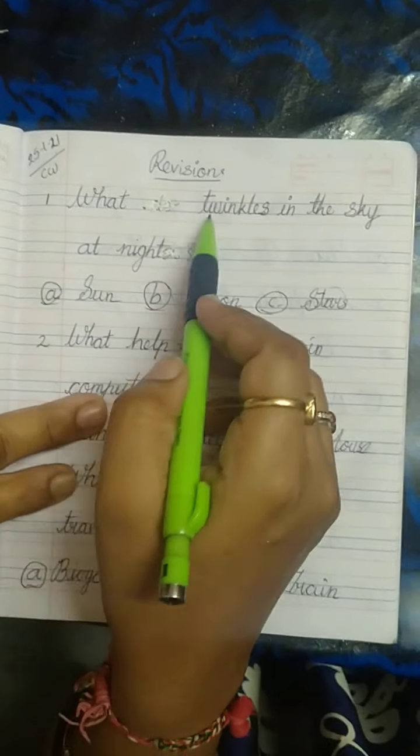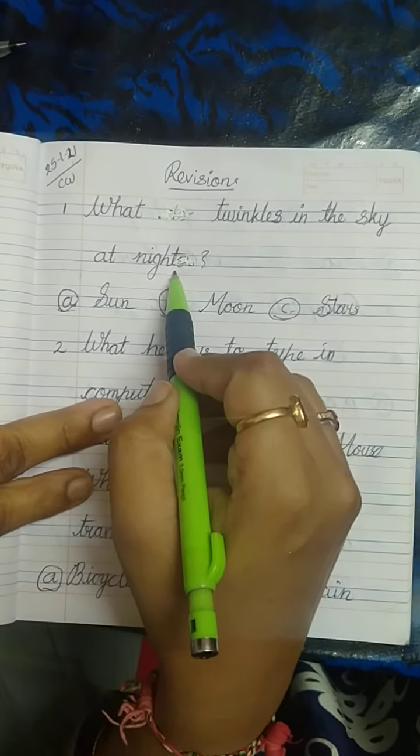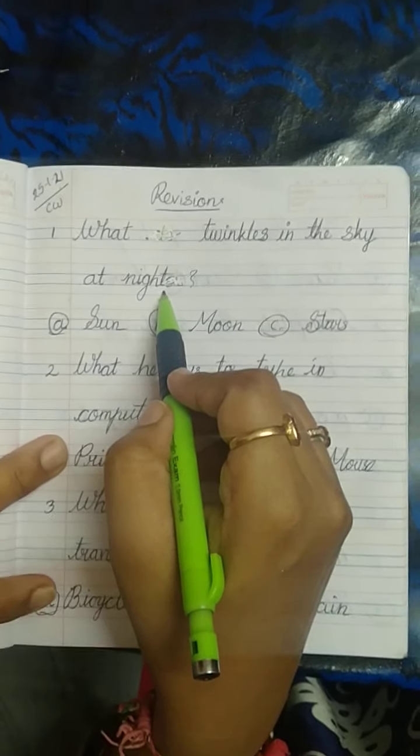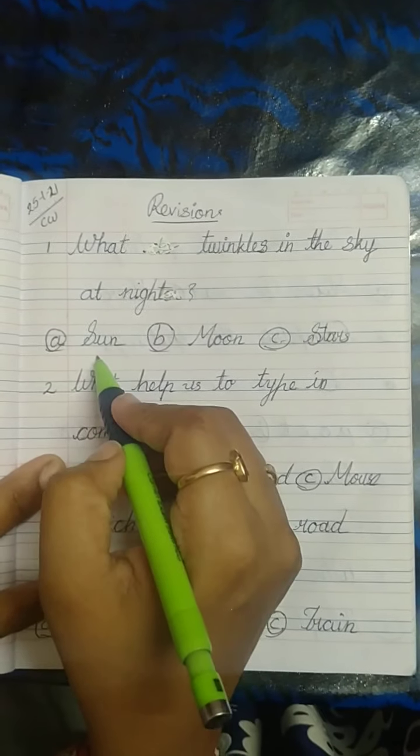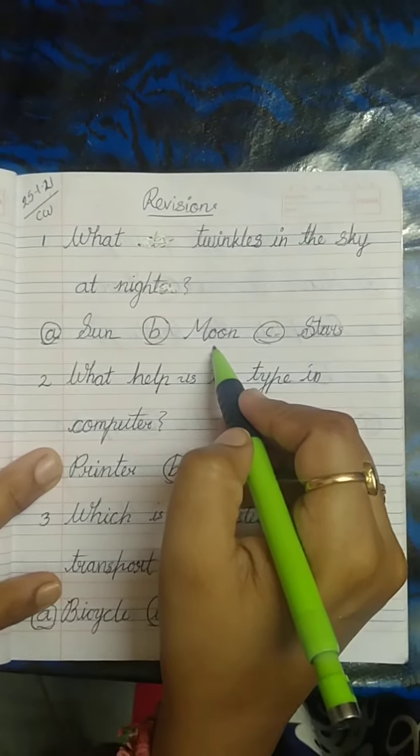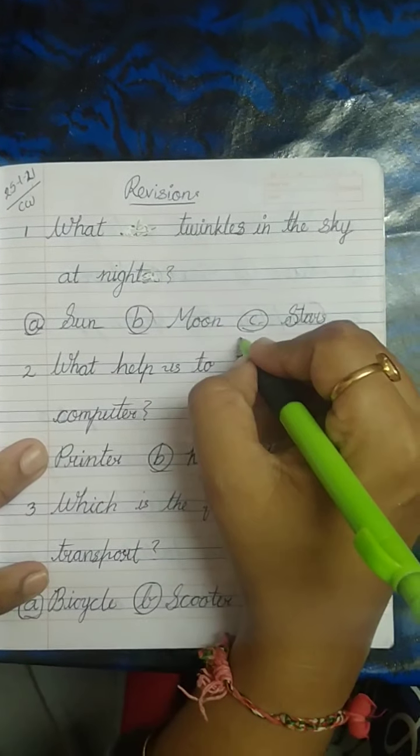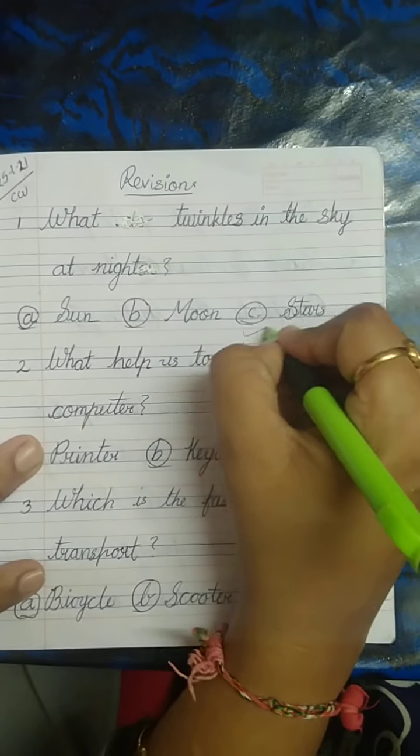First question is, what twinkles in the sky at night? What does the twinkle in the sky? Sun? No. Moon? No. Stars? Yes. Stars twinkle in the sky.